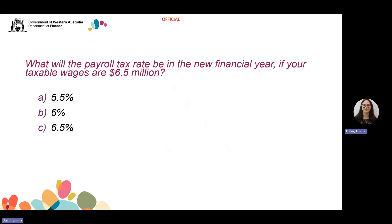Now a quick recap question. What will the payroll tax rate be in the new financial year if your taxable wages are $6.5 million? The choices are 5.5%, 6% and 6.5%. The correct answer is 5.5%. Remember, if your taxable wages are above $1 million, the rate is 5.5%.